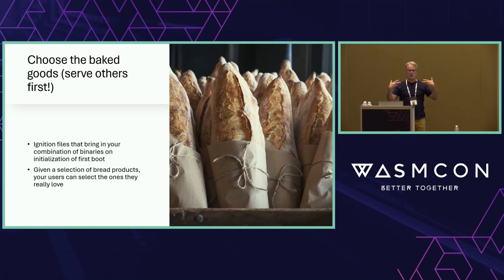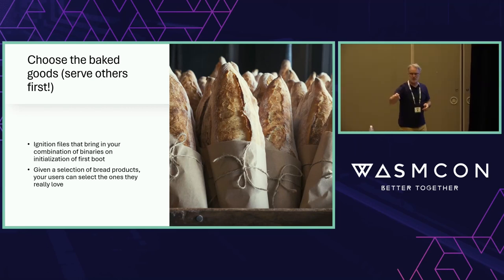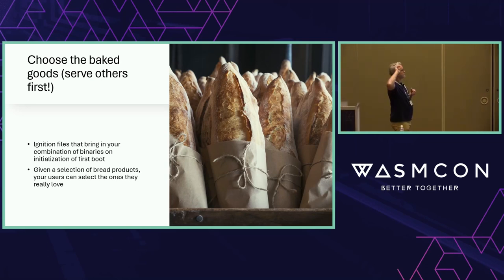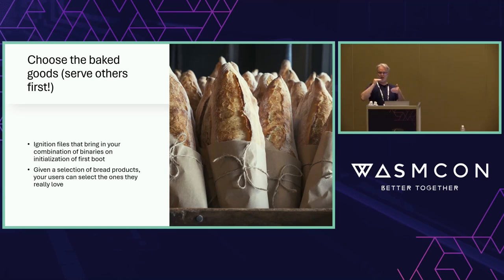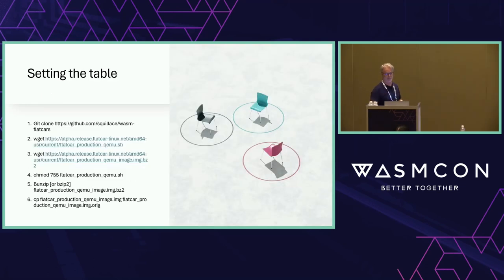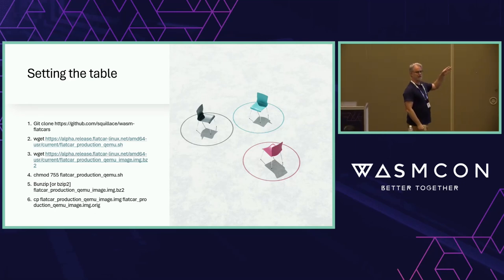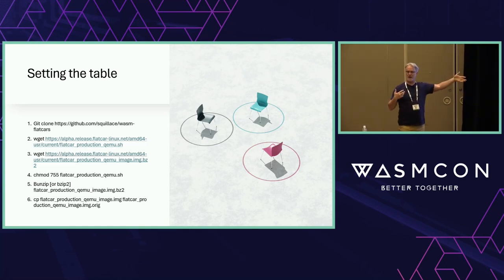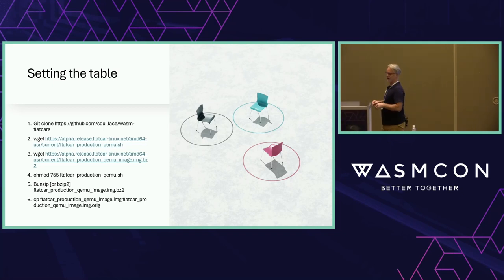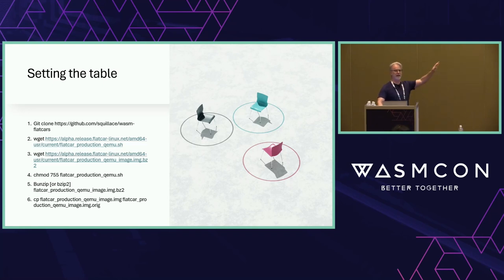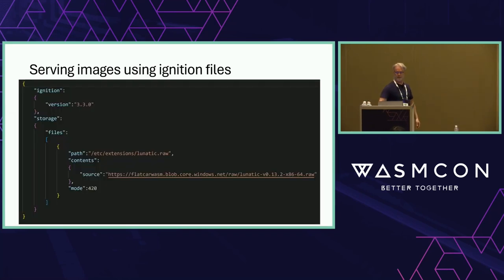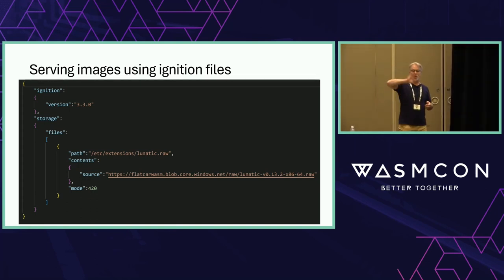Now you're on the other side — how do I consume this? You're going to need to choose the baked goods. We talked about an ignition file; I'm going to show you what that is now. This is the thing that is the list of items you're going to choose from your menu. The ignition file is compiled out to JSON — you can author these in YAML and then convert them. What I'm essentially doing here is just saying there's a Lunatic layer, and it loads initially a layer from this menu that I have in the cloud.